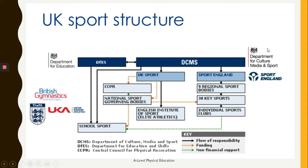If we look at this diagram, on one side we've got the DCMS — the Department for Culture, Media and Sport — which directly funds sport in the UK. On the other side we've got the DFES, the Department for Education, which directly funds school sport. That's not to say the DCMS doesn't have an impact there as well. School sporting facilities can often be paid for via the DCMS, via Sport England, through various programs, and sometimes funding can come from UK Sport — which we look at in Year 13 when we examine elite level sport.